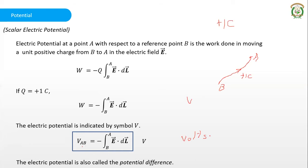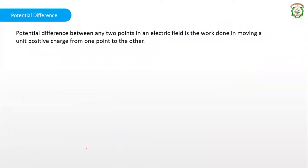This electric potential is also expressed in terms of potential difference, because we are taking the potential with respect to another point. The potential difference between any two points in an electric field is the work done in moving a unit positive charge from one point to the other in that electric field.